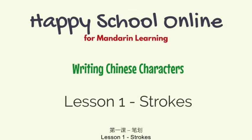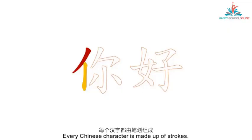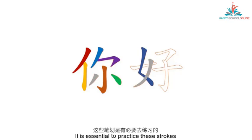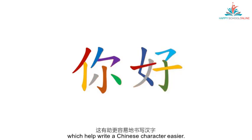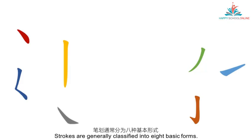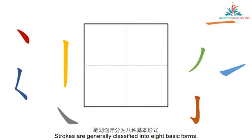Lesson 1: Stroke. Every Chinese character is made up of strokes. It is essential to practice these strokes, which help write a Chinese character easier. Strokes are generally classified into 8 basic forms.